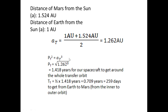Again, I'm using Kepler's law to solve for the semi-major axis distance. I plugged 1.262 into A, solved for Pt, and that gave me 1.418 years. And that's the time it takes for our spacecraft to go around the whole transfer orbit.